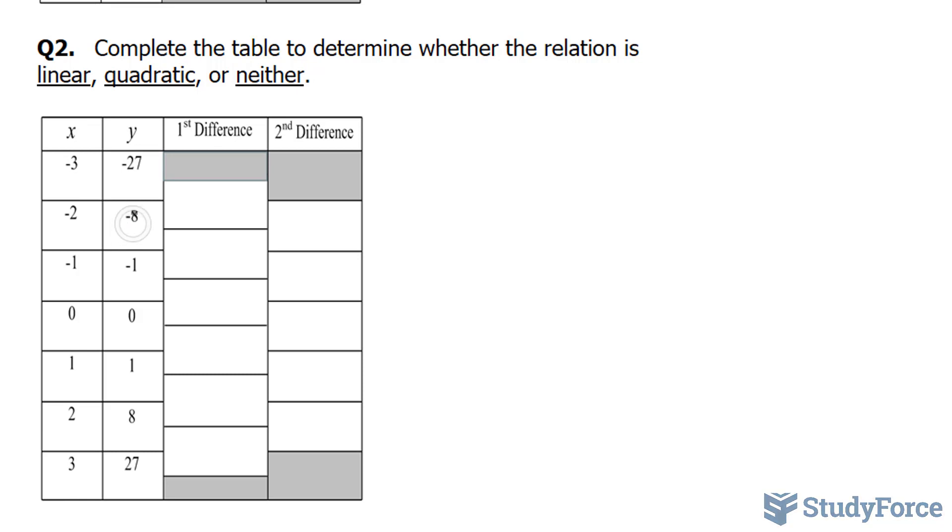Starting off with negative 8 minus 27, we have positive 19. Negative 1 minus negative 8 gives us positive 7. 0 minus negative 1, that is equal to 1. 1 minus 0, also 1. 8 minus 1 is 7, and 27 minus 8 is equal to 19. These are the values you should have gotten for your first differences.